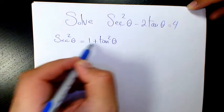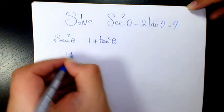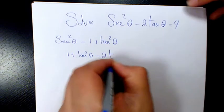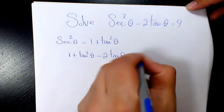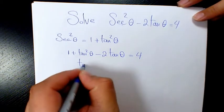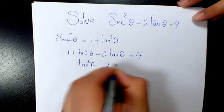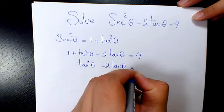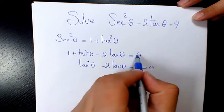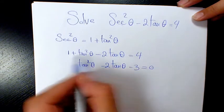So sec²θ = 1 + tan²θ. That's going to be 1 + tan²θ - 2tanθ = 4. So then I would say that tan²θ - 2tanθ - 3 = 0. Why? Because you move this one in here, it's going to be negative four here. We have one, is going to be negative three.